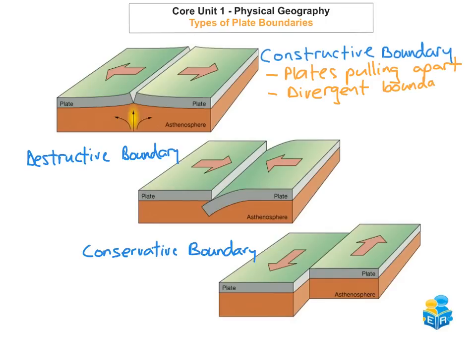So make sure you know that word: divergent. The next key feature is that in the mantle there are convection currents, and the convection currents are what cause the plates to pull apart. New rock is going to be formed because, as the plates pull apart and magma rises up, it solidifies and forms new rock.